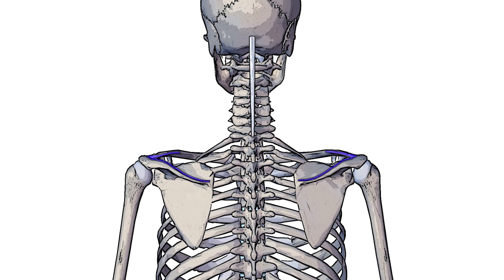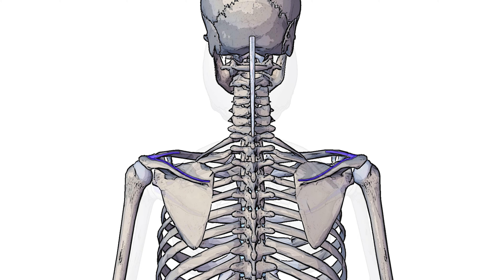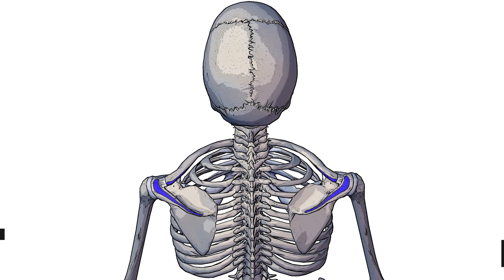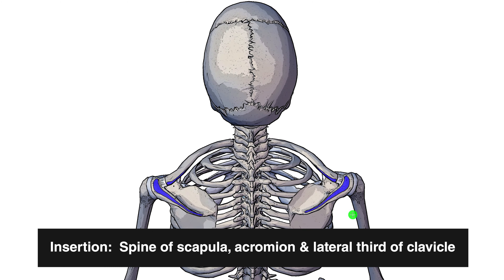Next, marked out in blue is the insertion of the trapezius, which runs all the way from the spine of the scapula to the acromion and onto the lateral third of the clavicle.